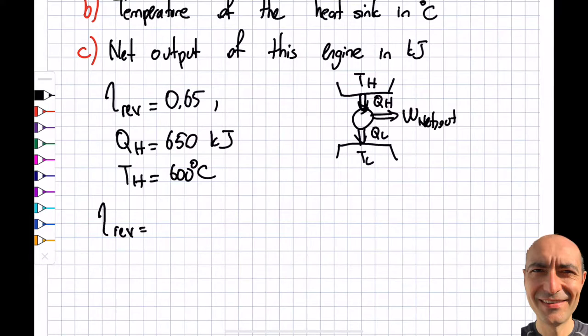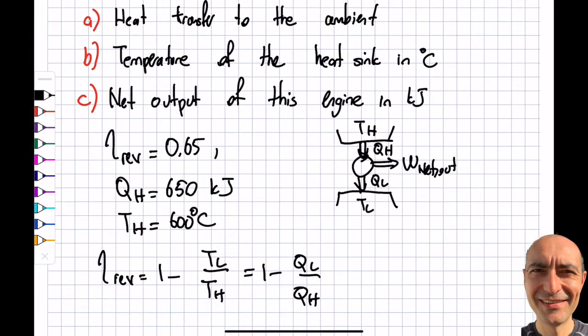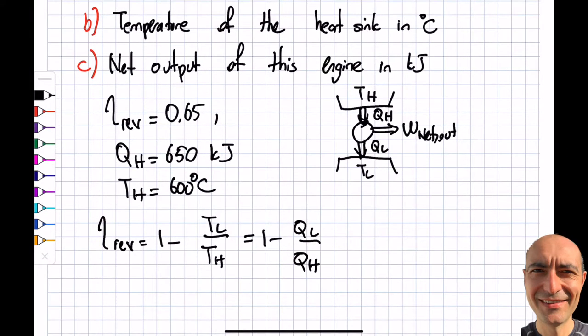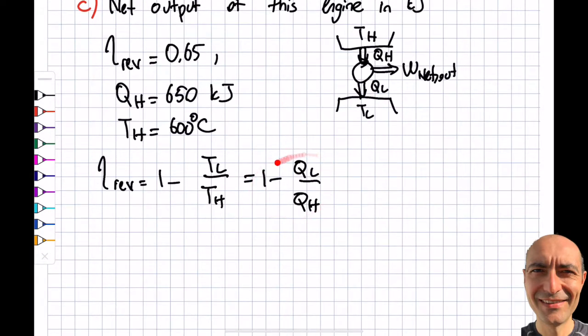For a reversible engine, η_rev = 1 - TL/TH = 1 - QL/QH. The first part of the question asks about the heat transfer to the ambient, which is QL, so I'll use the QL/QH equation since I know the efficiency and QH.